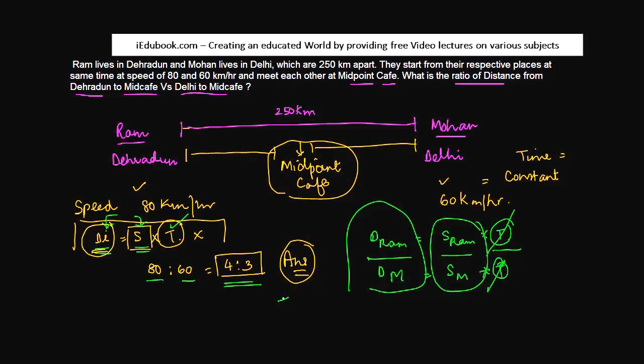In this question, what was the change? The change was that the time was constant. In the previous ones that we saw, distance was constant. Thank you very much.